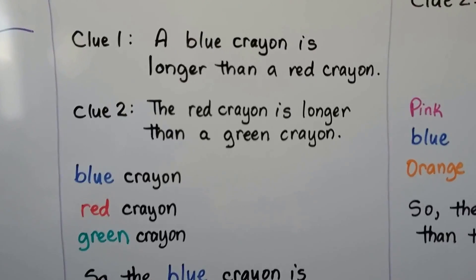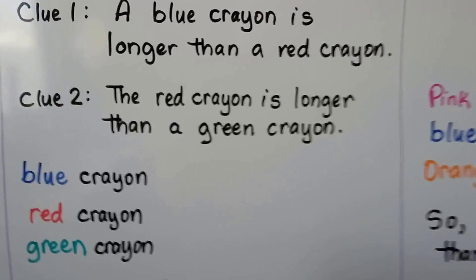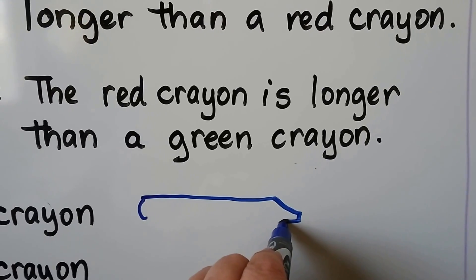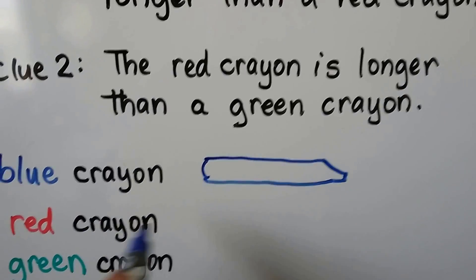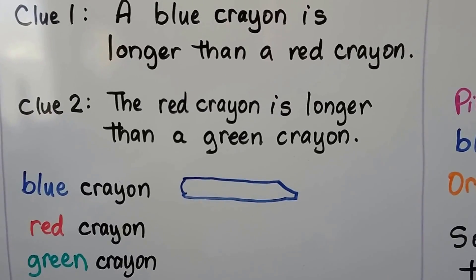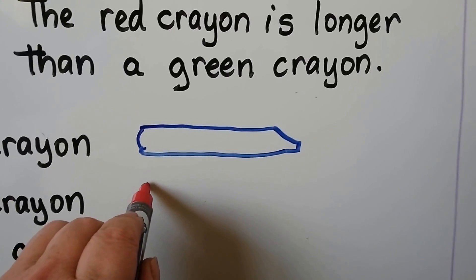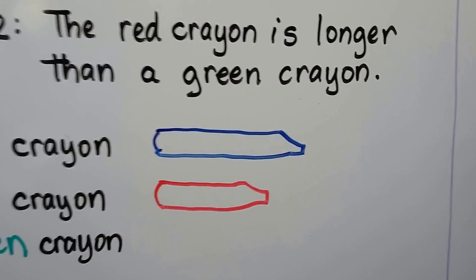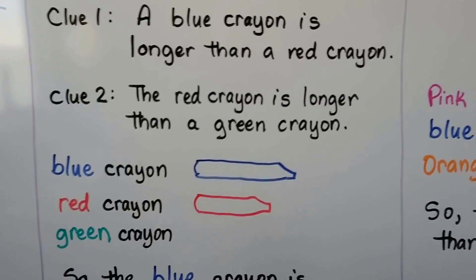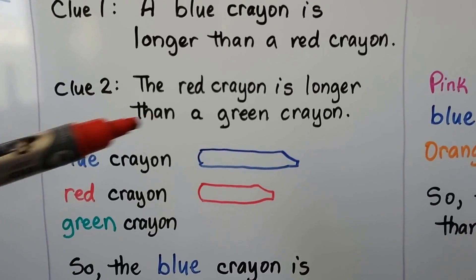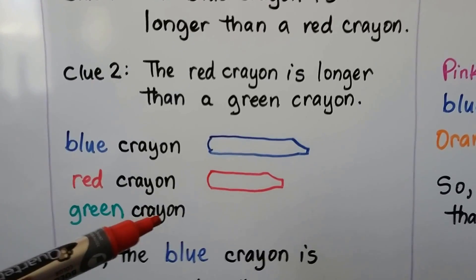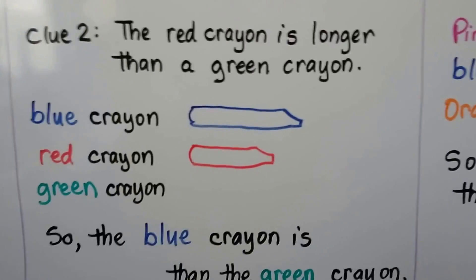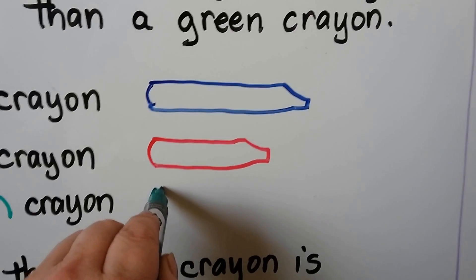A blue crayon is longer than a red crayon, so we make a blue crayon longer than the red crayon. We draw the red crayon and make sure the blue one is longer. Then it tells us the red crayon is longer than the green crayon, so we draw the green crayon making sure the red crayon is longer than the green one.